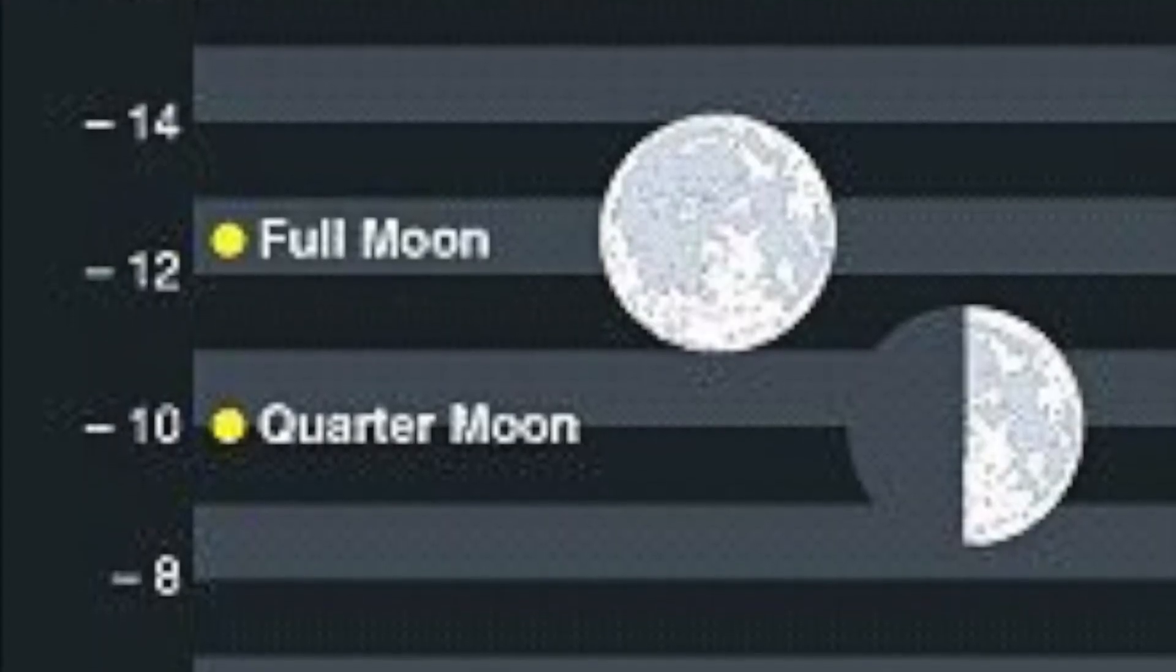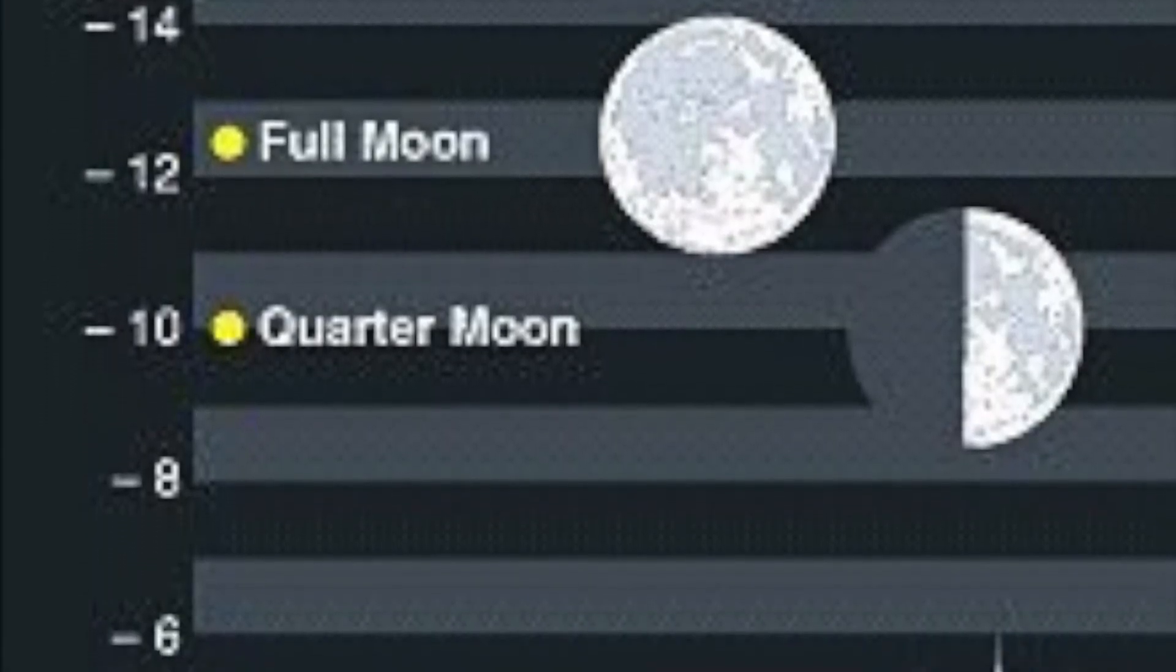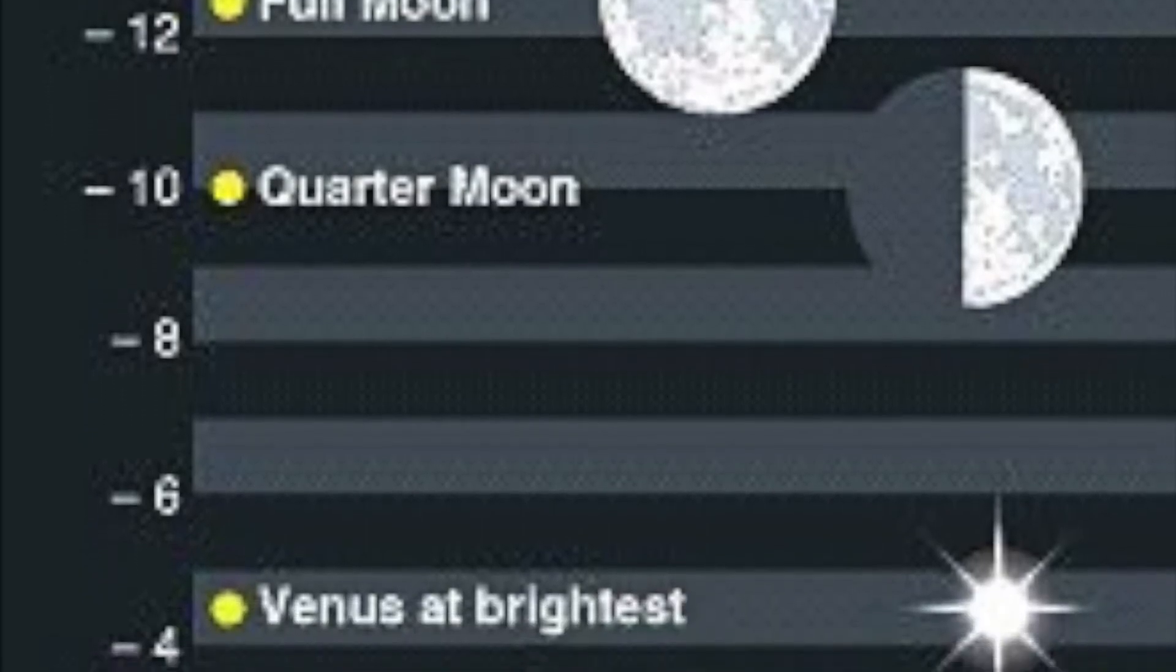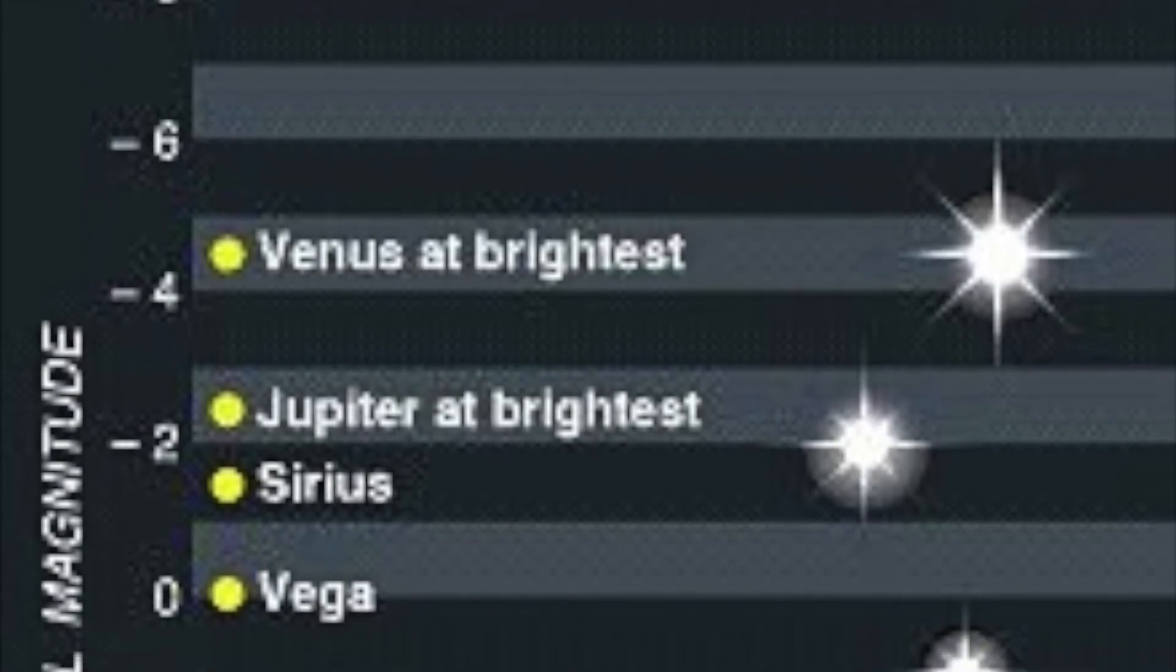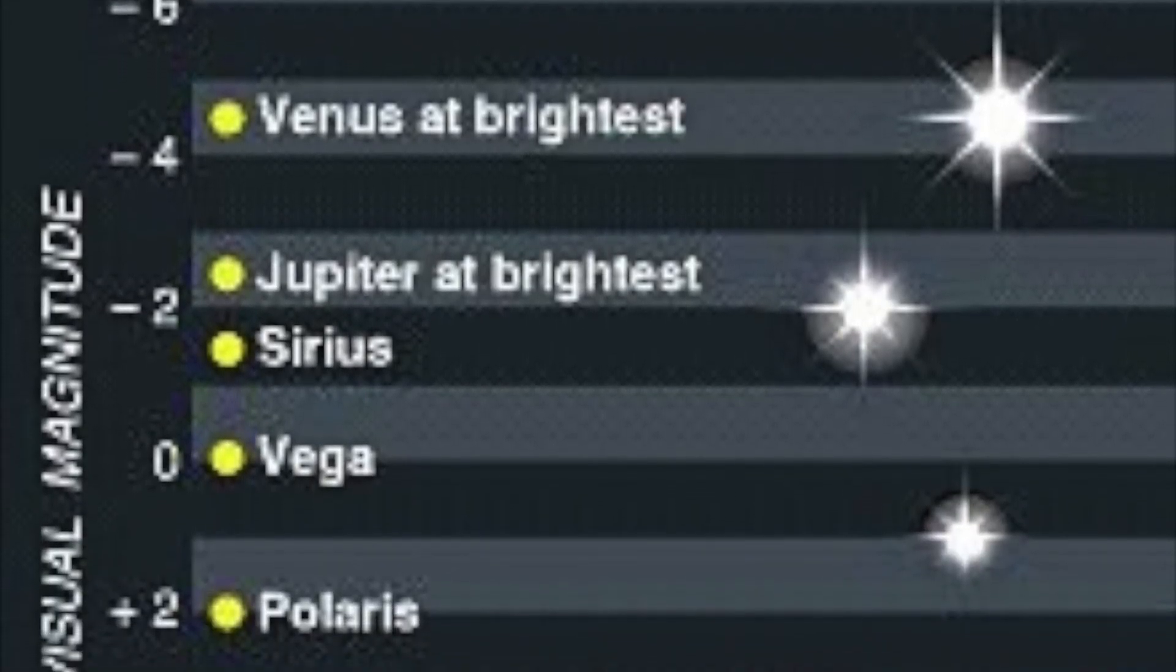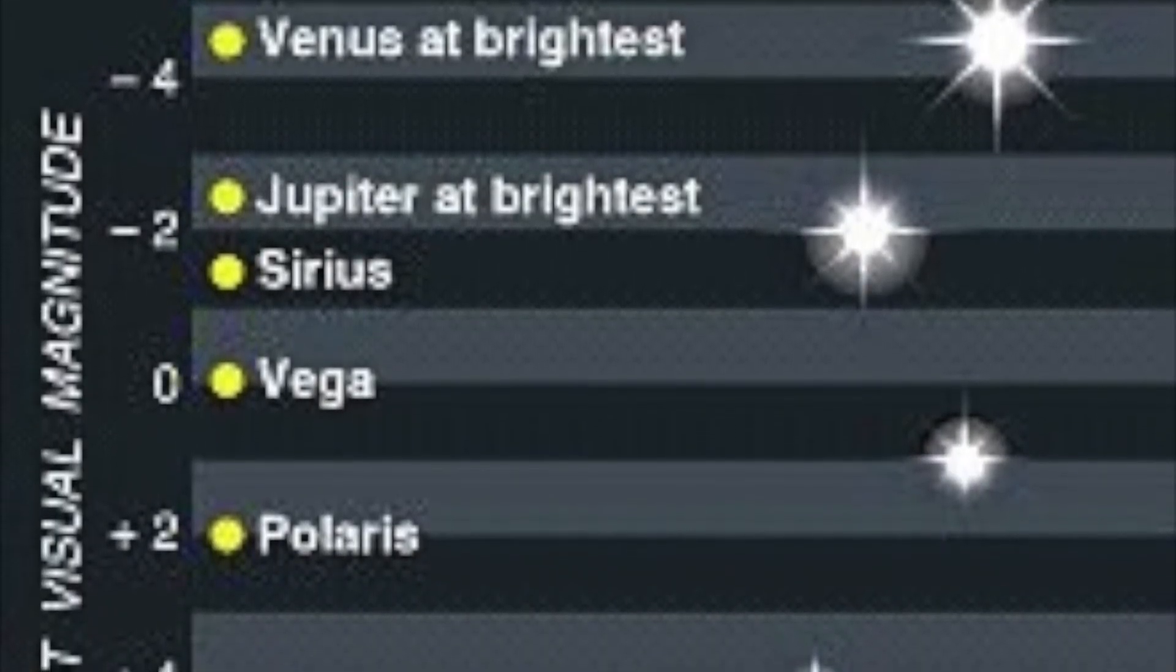Of all the planets visible in the night sky at certain points in the year, Venus is the brightest, with its apparent magnitude of negative 4. As we move further down the scale, we can see that the north star, Polaris, is actually quite dim, being only of the second magnitude.